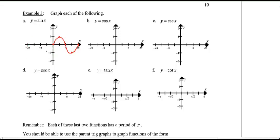Cosine starts at 1, goes to 0, then negative 1, back to 0, then back to 1. Make sure you curve it — don't draw straight lines.